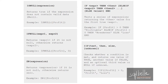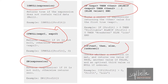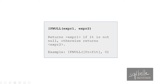These are the functions we'll use to handle nulls in Tableau: isNull, ifNull, ZN, if-else statement, and IIF. The ifNull function accepts two values — it checks the first expression, and if it has a value, it retains it. Otherwise, it returns the second value.